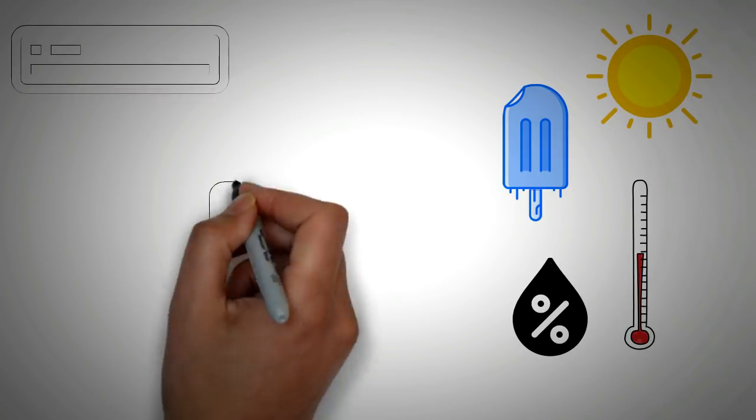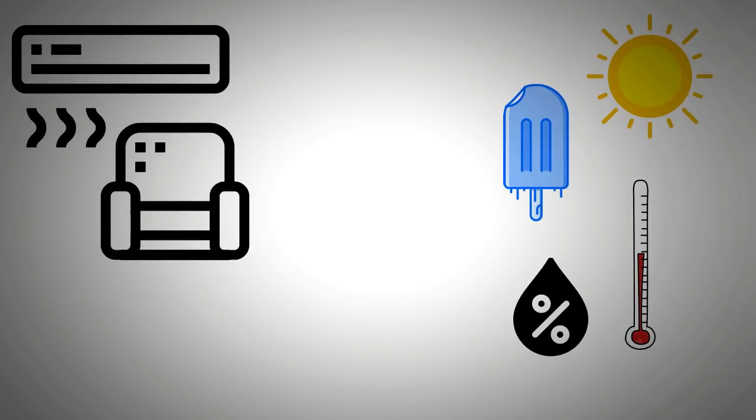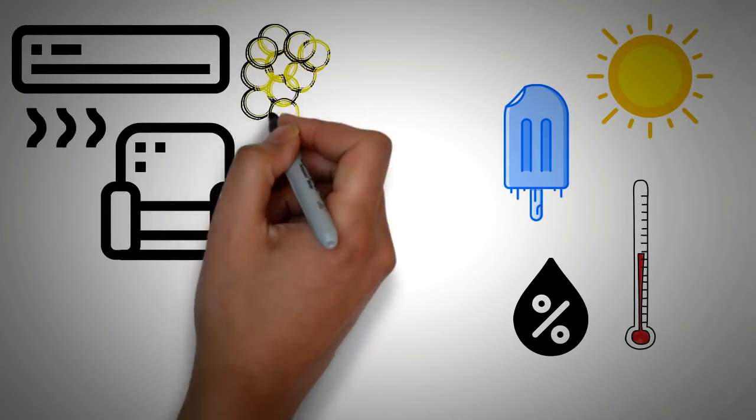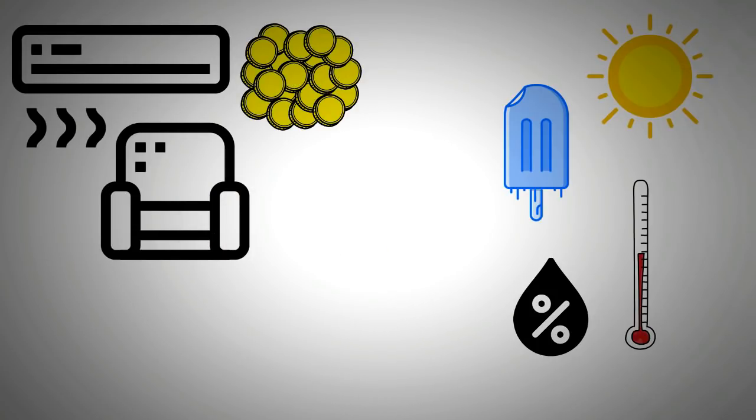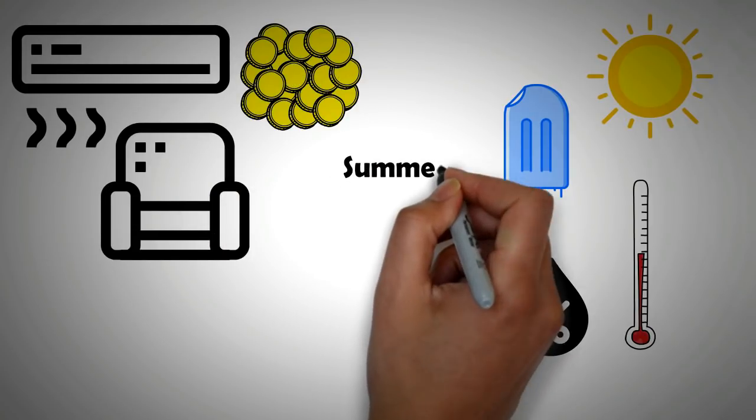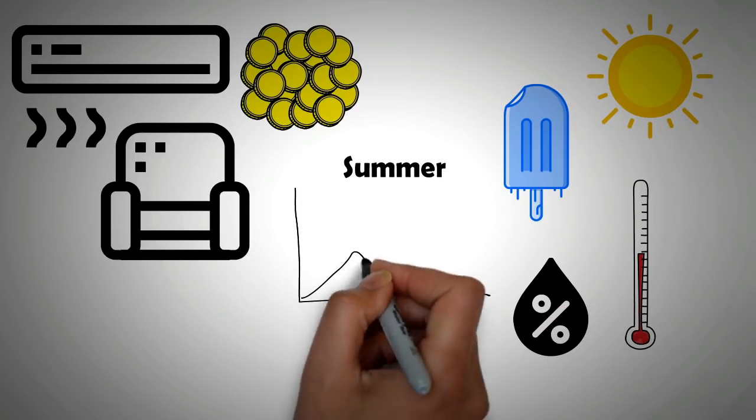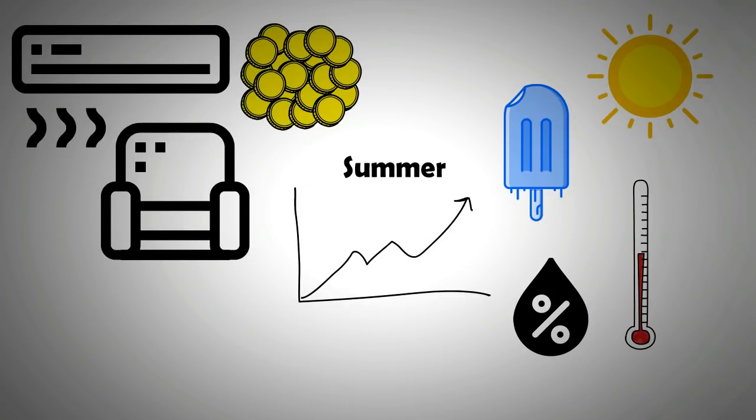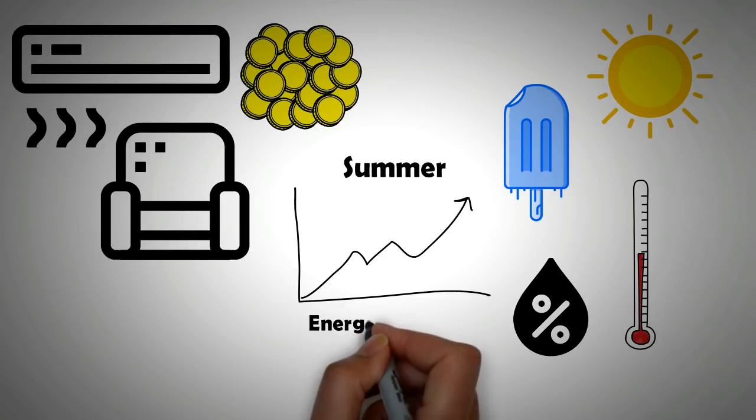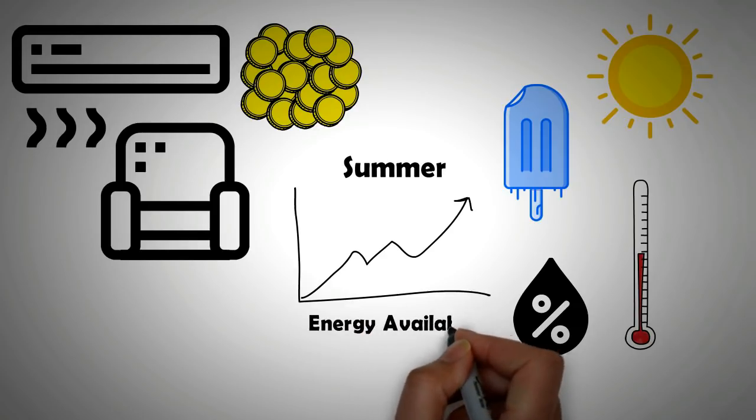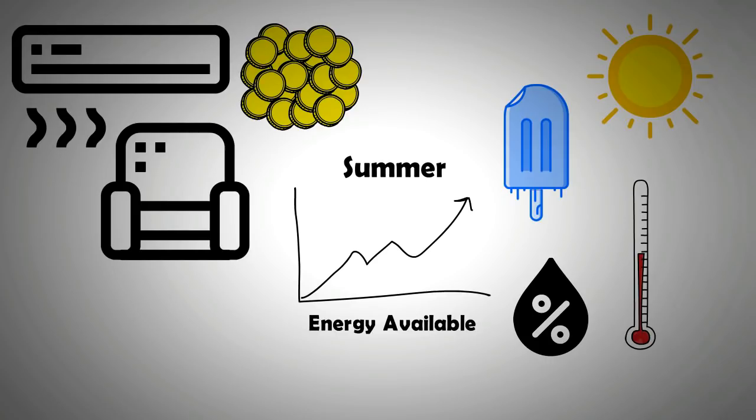One of the advantages of cooling instead of heating is that cooling is required more when there's more heat energy around to tap into, or in other words when there's more energy available. To be more specific, we have more solar energy available to us. On the other hand, heating is required when there is less energy in the ambient to tap into.